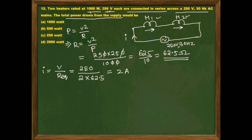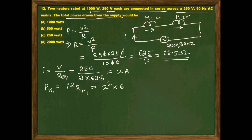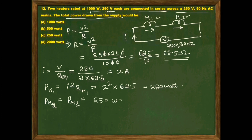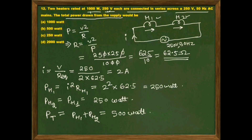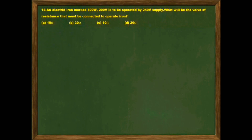Power drawn by heater 1 is P_H1 = I²R = 2² × 62.5 = 250 watt. Similarly P_H2 = 250 watt since they have the same rating. Total power drawn P_total = P_H1 + P_H2 = 500 watt. So option B is the right answer.